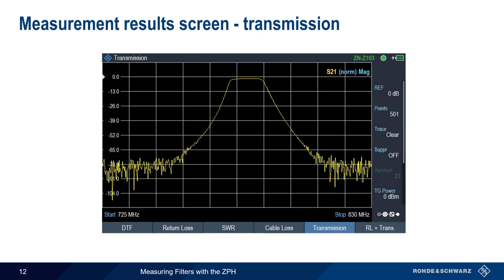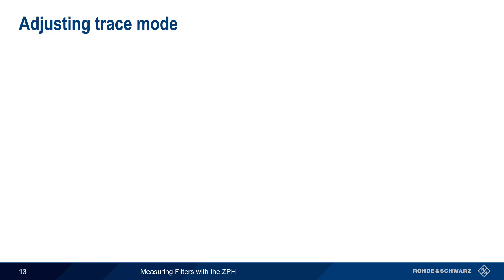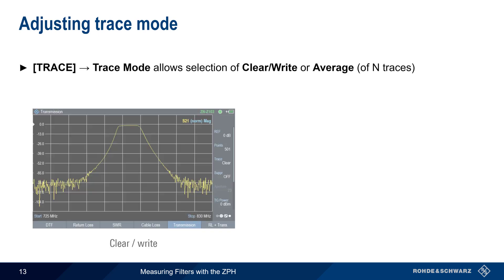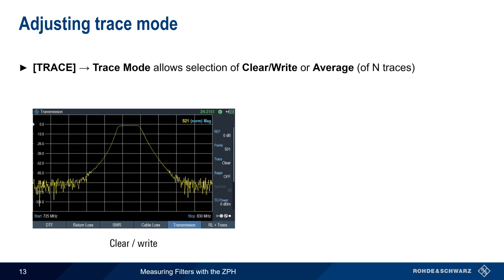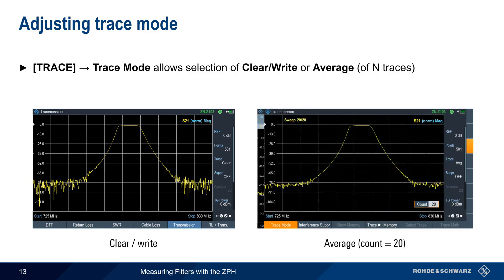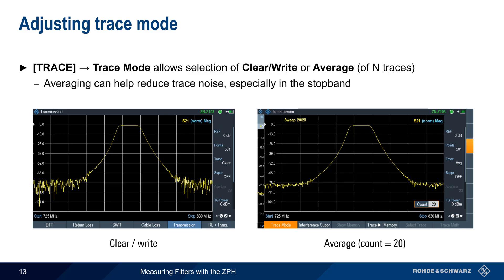Here is an example of a transmission measurement made on a bandpass filter. There are two settings that can help when viewing results. The first is changing the trace mode from Clear Write, which updates the display with every sweep, to Average, which displays the user-defined average of N traces. Averaging can help reduce noise on the trace, and this is particularly true when looking at the stop band. The average trace on the right has much less noise in the stop band compared to the unaveraged trace on the left.